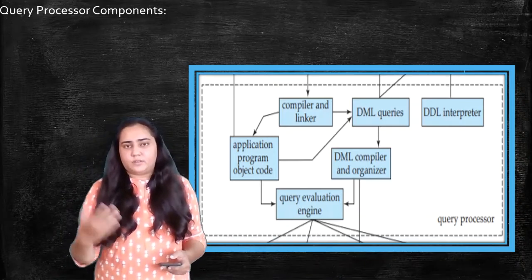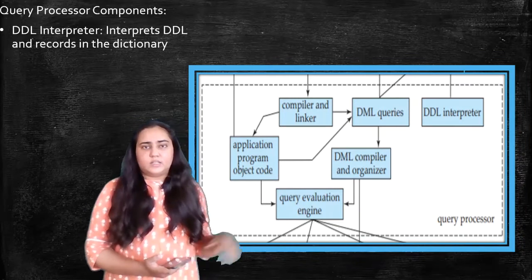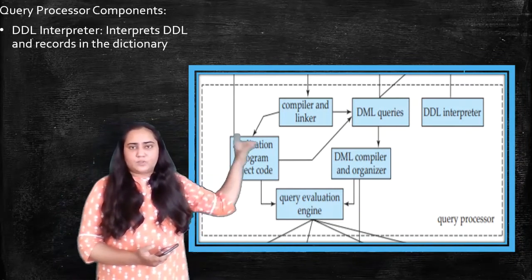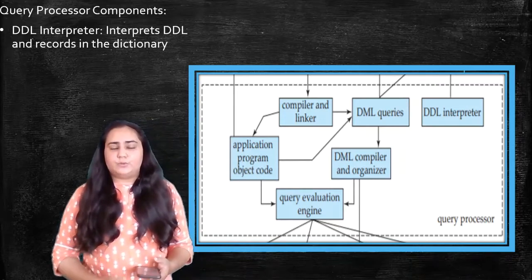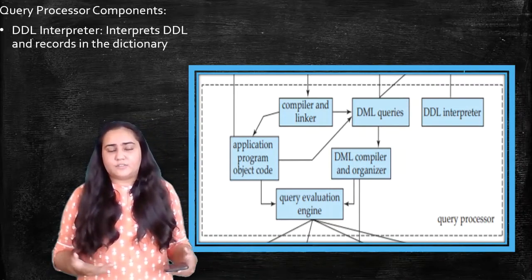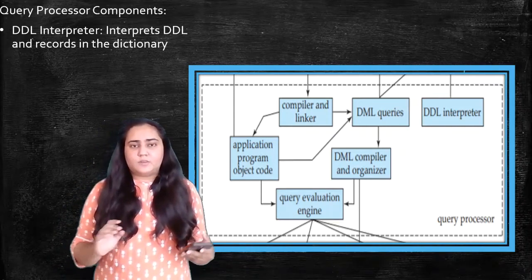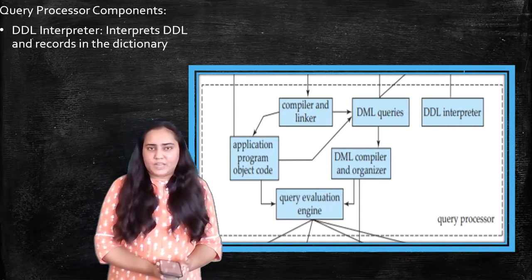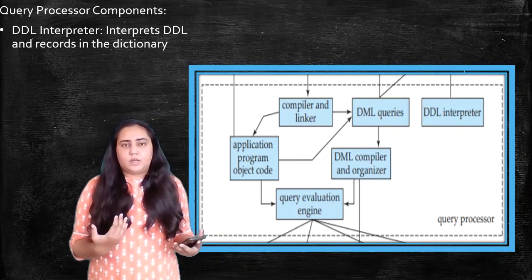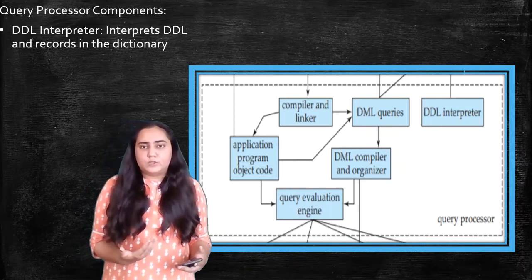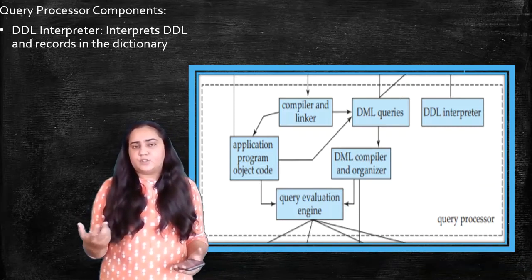Now let's talk about the query processor itself and the components present in it. The first thing is a DDL interpreter which is right at the far end of the query processor. This interprets the DDL, that is the Data Definition Language, and records it in the dictionary. So this is the place where you would create your tables and decide what would be their data types, what would be the rules and regulations to enter data into that table. That is what the DDL interpreter does.